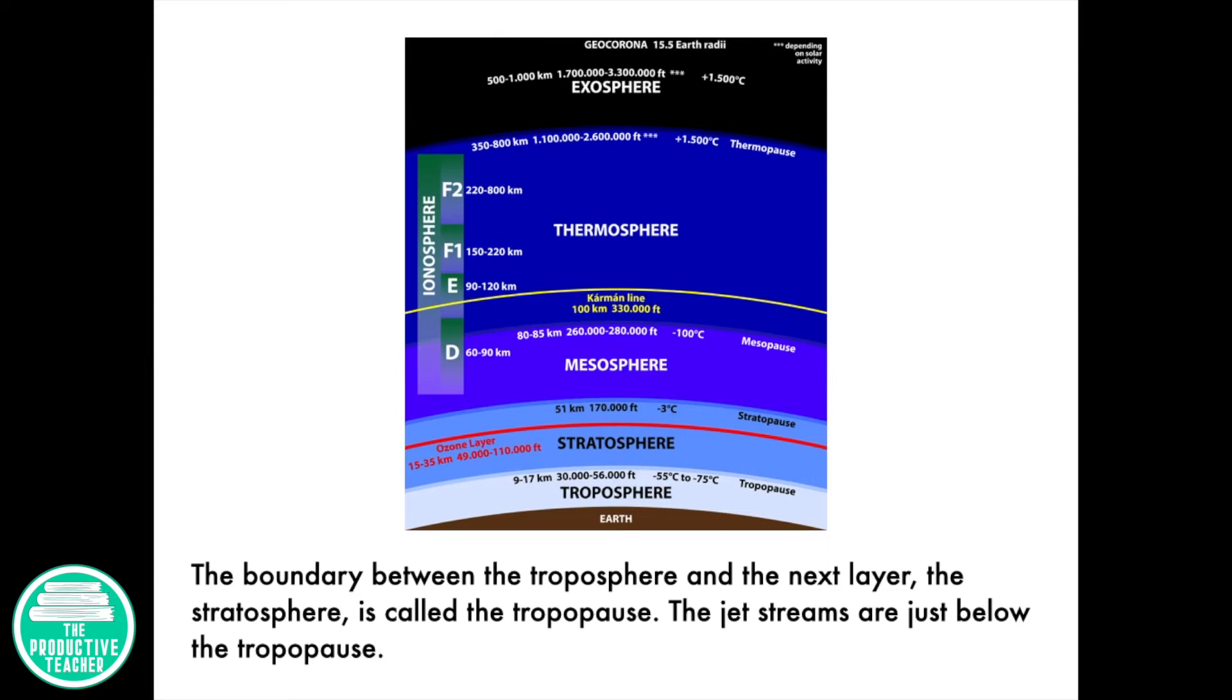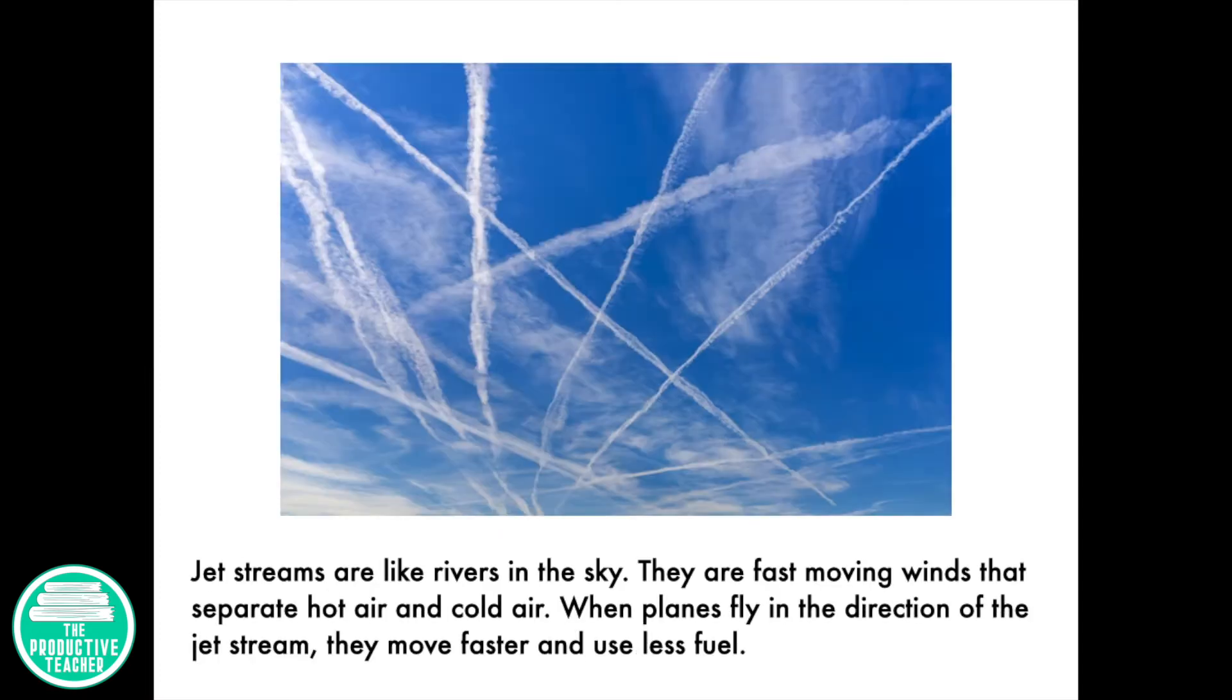The boundary between the troposphere and the next layer, the stratosphere, is called the tropopause. The jet streams are just below the tropopause. Jet streams are like rivers in the sky. They are fast-moving winds that separate hot air and cold air. When planes fly in the direction of the jet stream, they move faster and use less fuel.